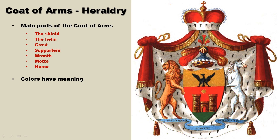A coat of arms identifies a particular family, but in reality an individual is first given a coat of arms. Later on, that will become the coat of arms for his or her descendants. And every noble needs to have a coat of arms. A recent example is Kate Middleton. She did not come from a royal background, so before she married into English royalty, she needed to have a coat of arms designed for her. This took place before the royal wedding, and it is known as the Middleton coat of arms.